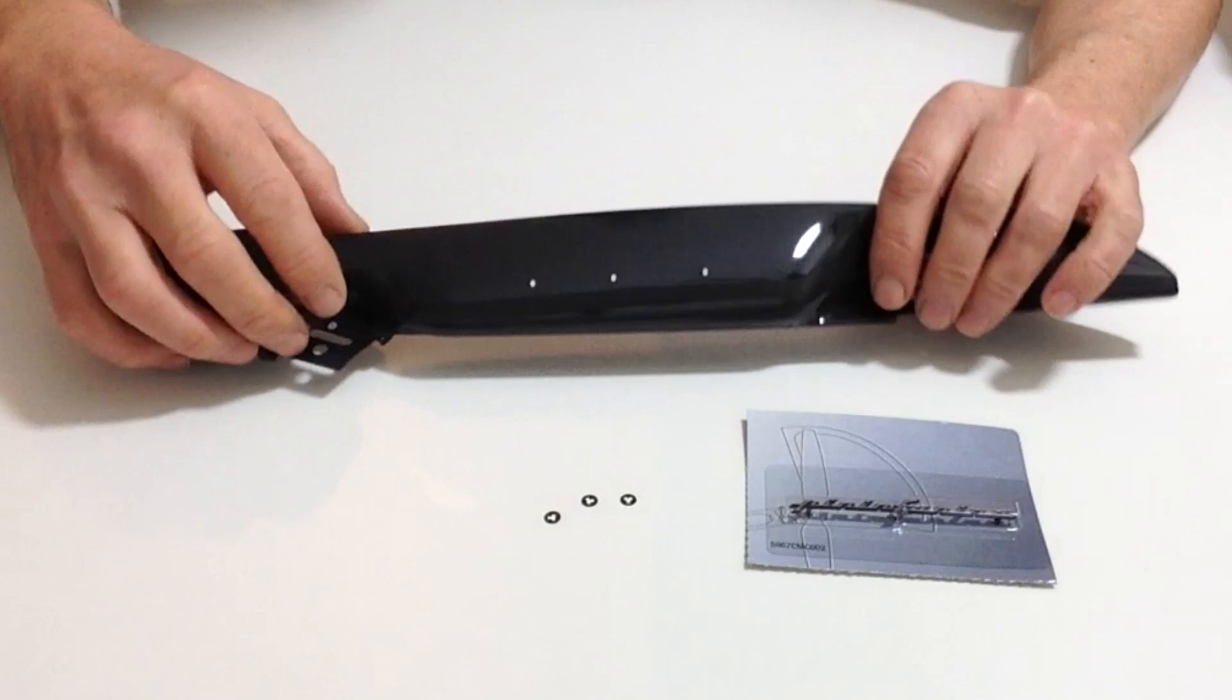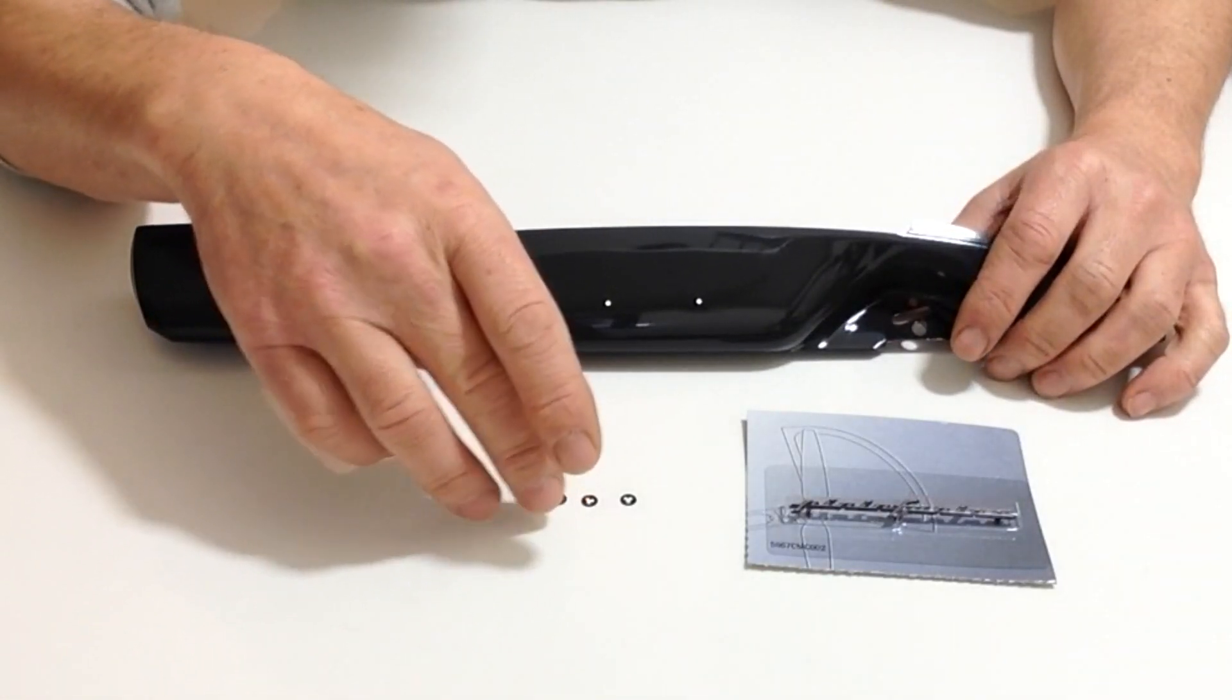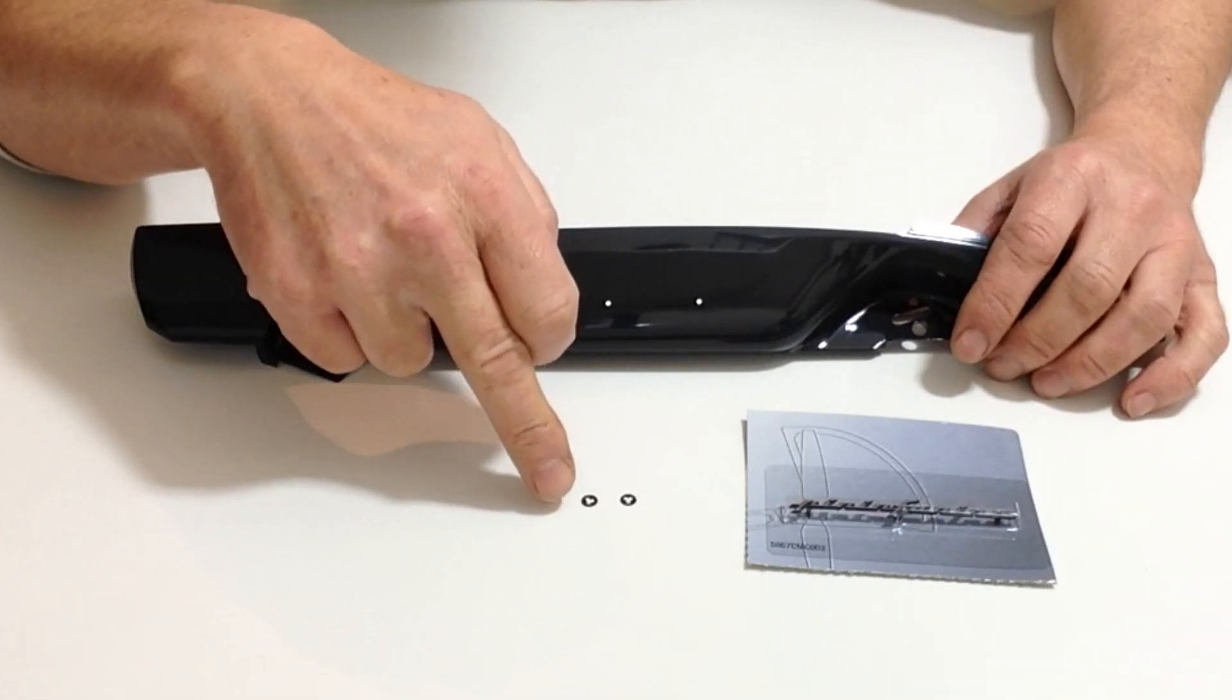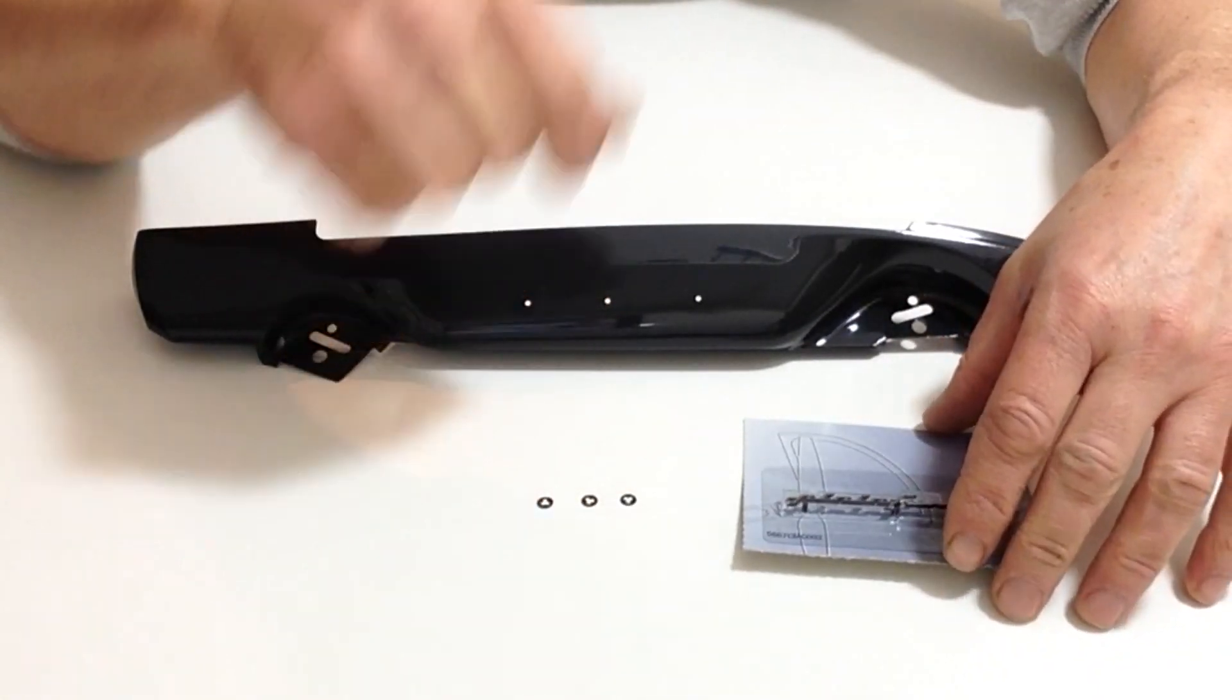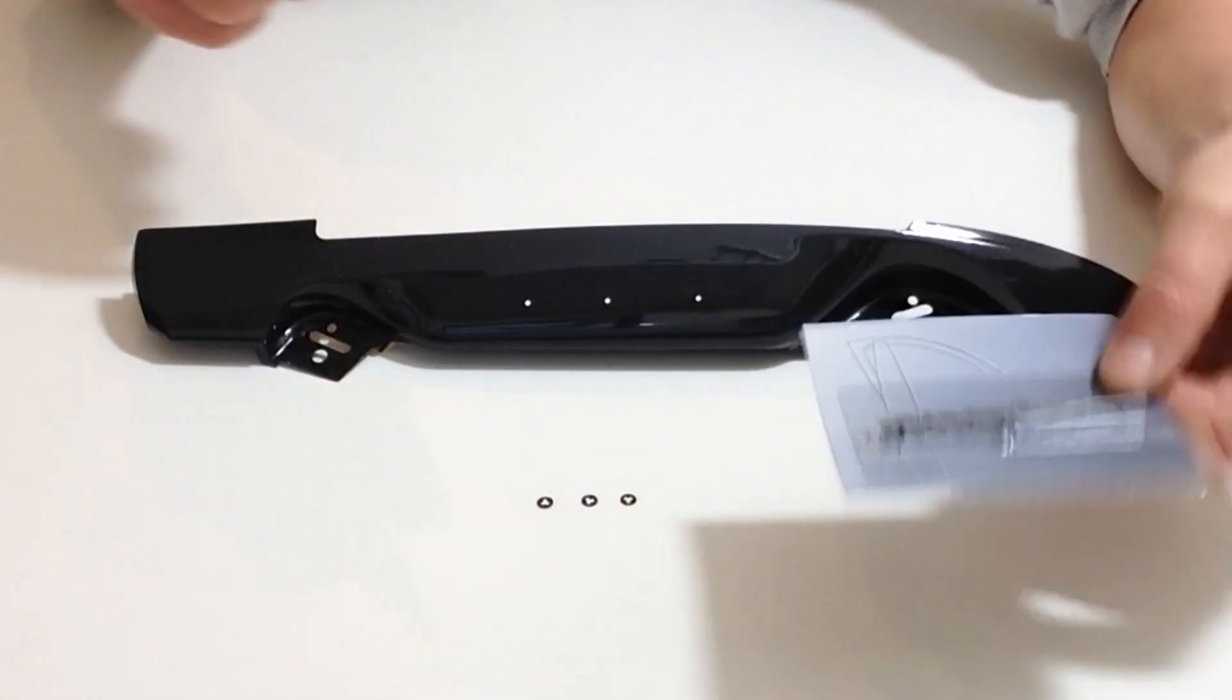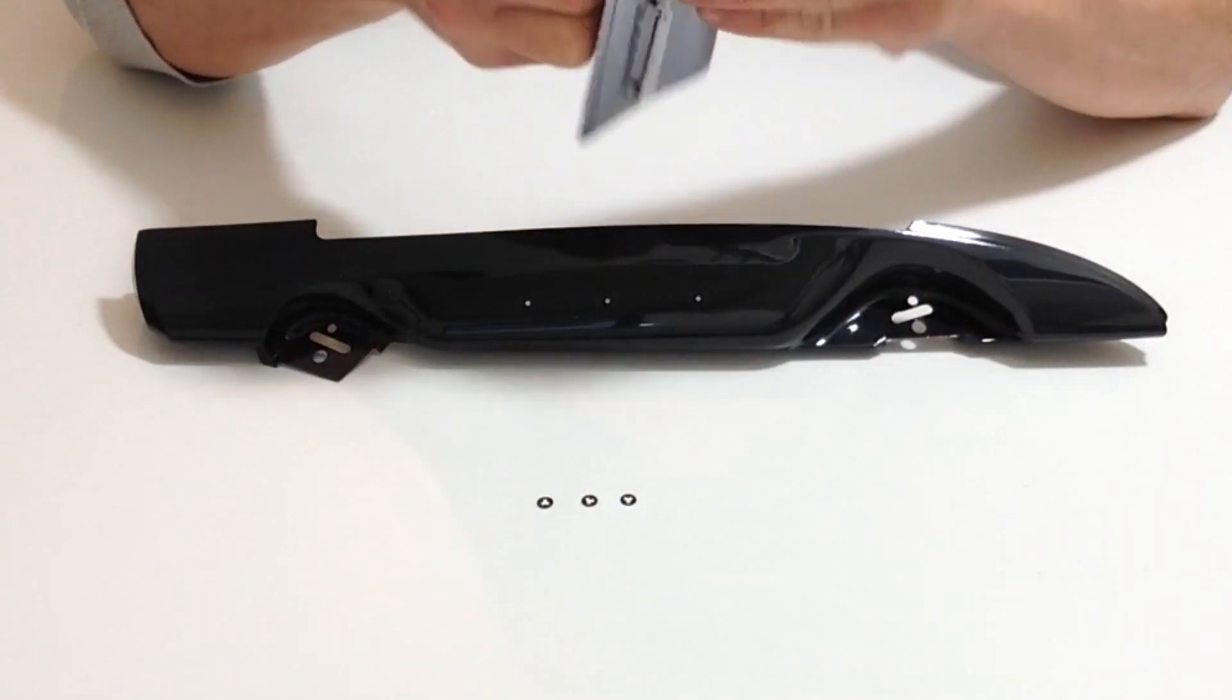Take your side protector out of the blister pack and you've got 3 tiny little washer stays for the Pininfarina badge. Take your Pininfarina badge from stage 1, cut it out, and remove the badge from the packaging.